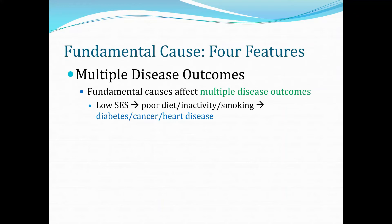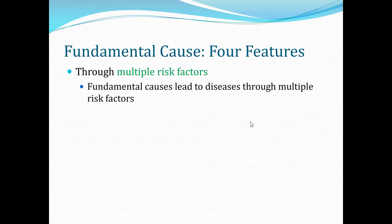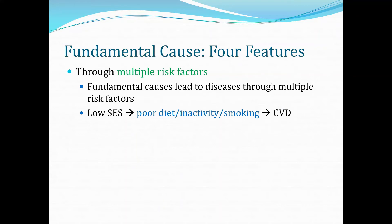For example, low SES — a single indicator of social class — is associated with diabetes, cancer, and heart disease. The second key component is that fundamental causes affect multiple health outcomes through multiple risk factors. For instance, the fundamental cause of low SES leads to cardiovascular disease through mediators such as poor diet, inactivity, and smoking.